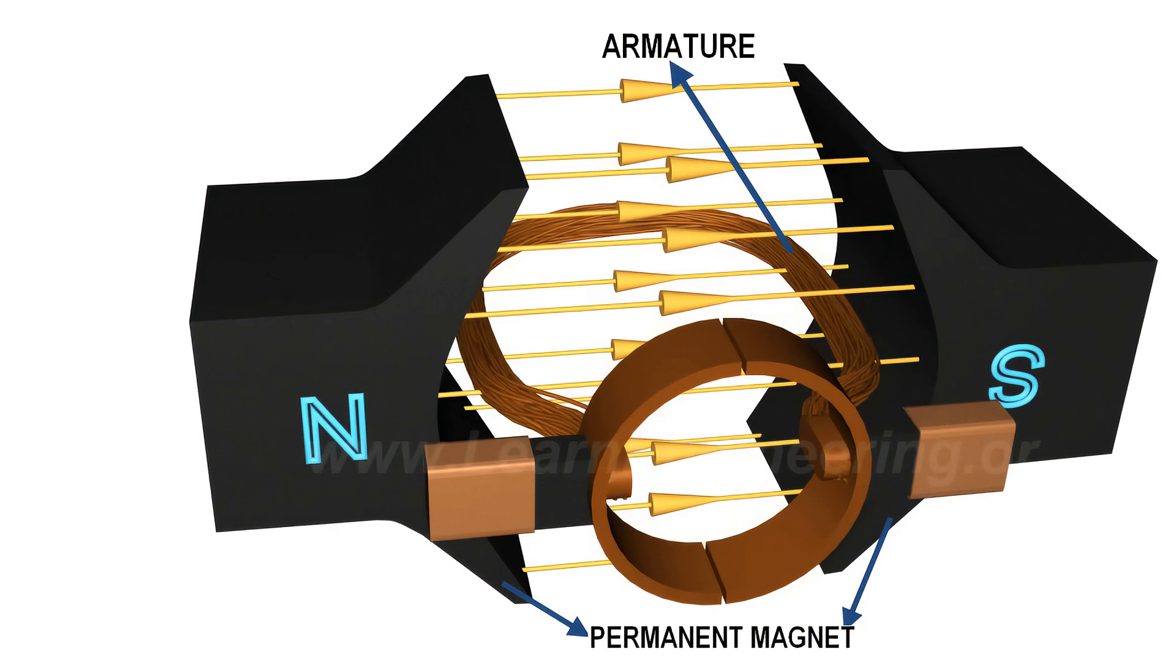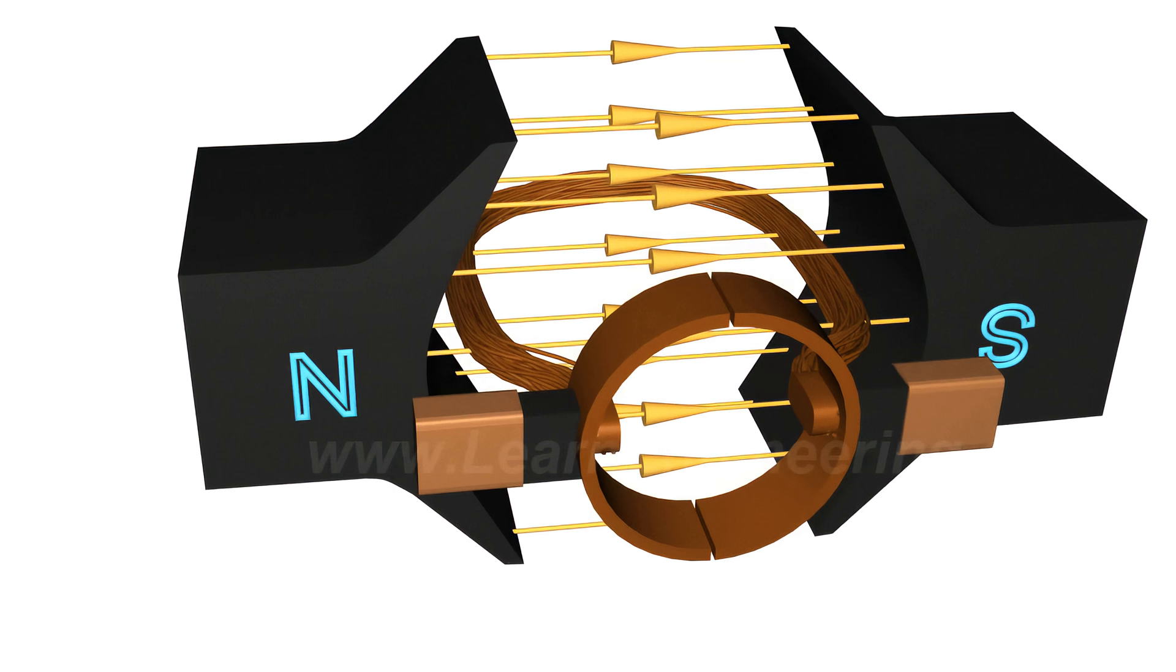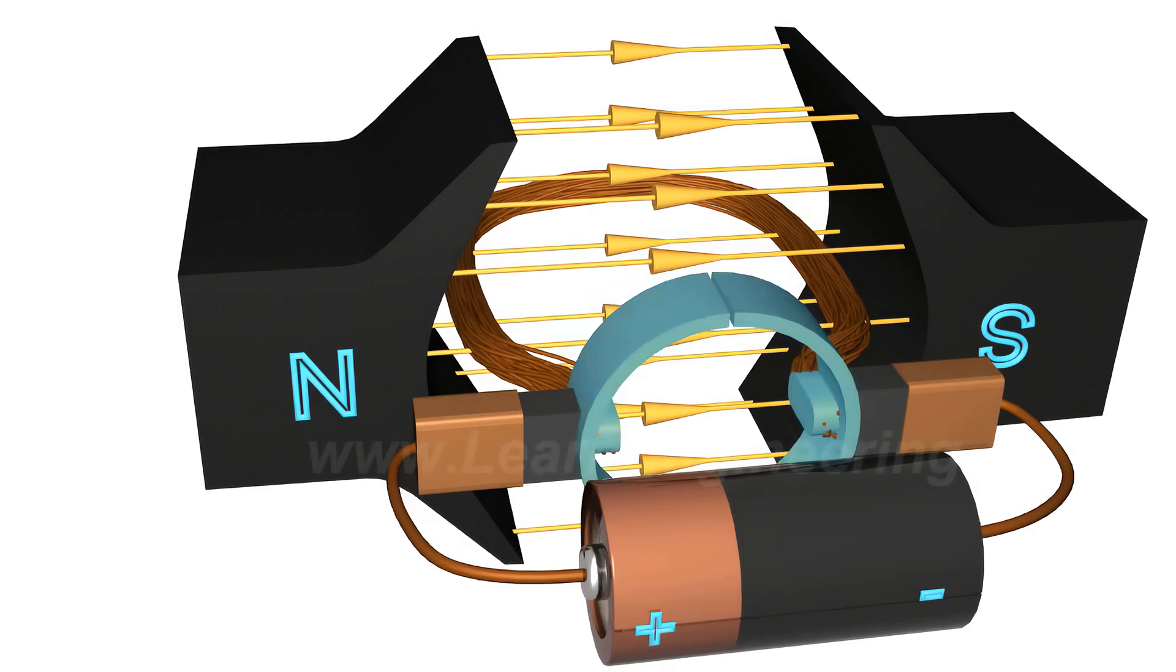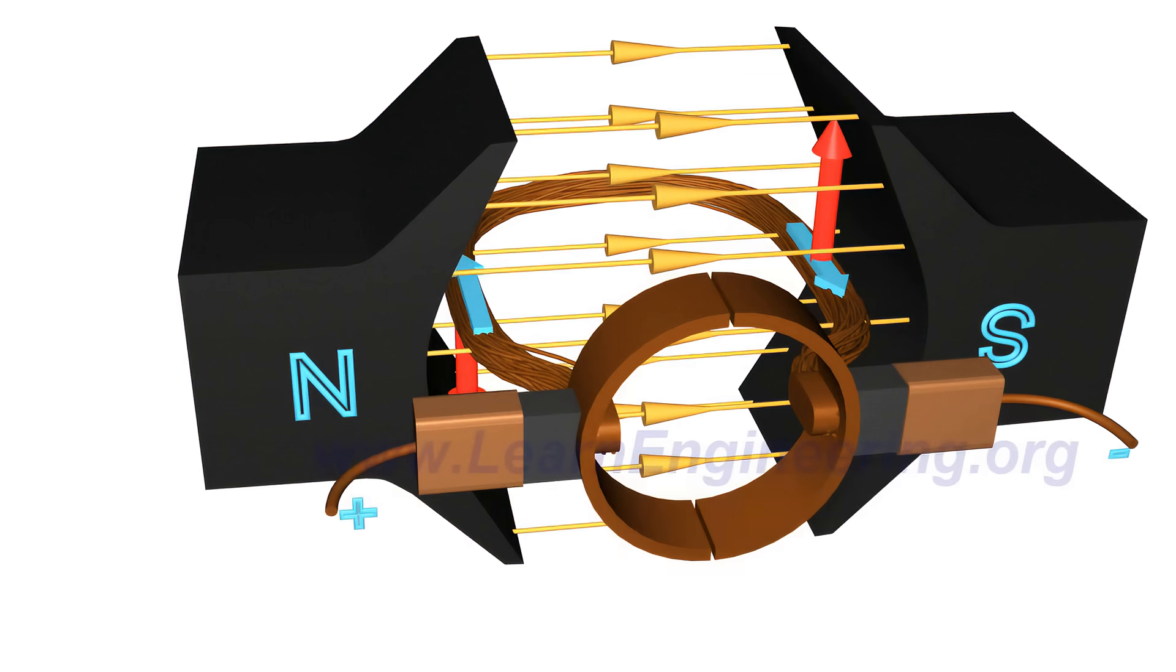The armature is connected to a DC power source through a pair of commutator rings. When the current flows through the coil, an electromagnetic force is induced on it according to the Lorentz law, so the coil will start to rotate.